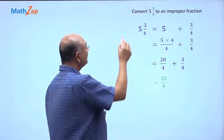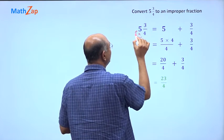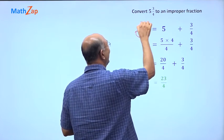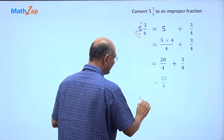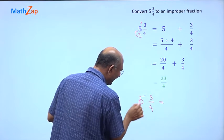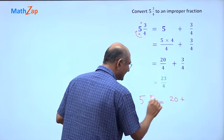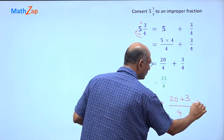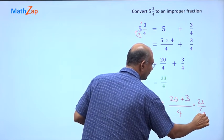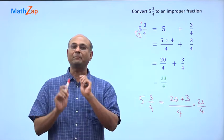I could have done this by directly multiplying these two. So I multiply these two, then I add that. So how do I do that? 5, 3 by 4, 5 into 4, so 20 plus 3 by 4, so 23 by 4. This is a shorter way to do the same problem.